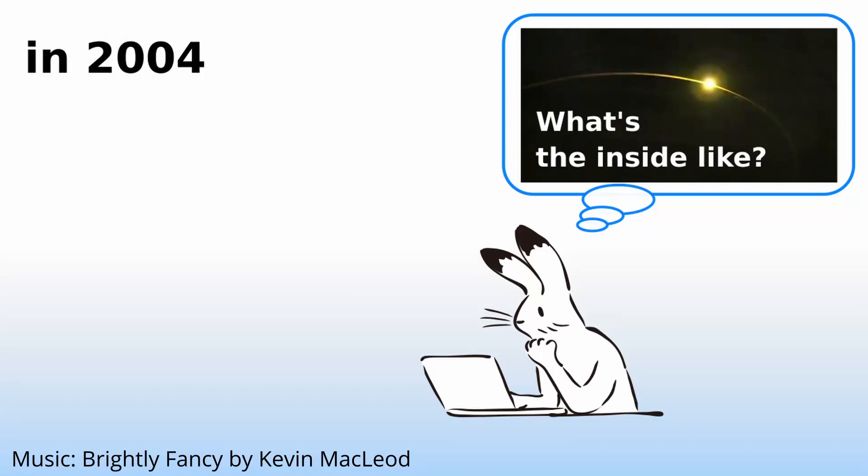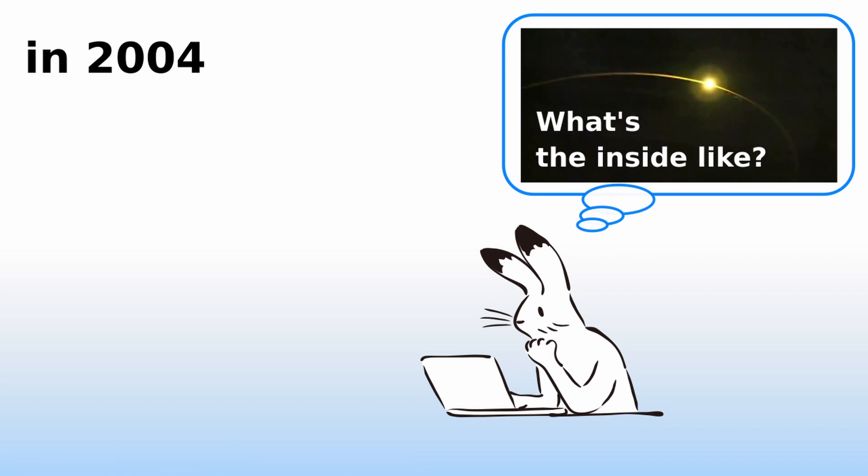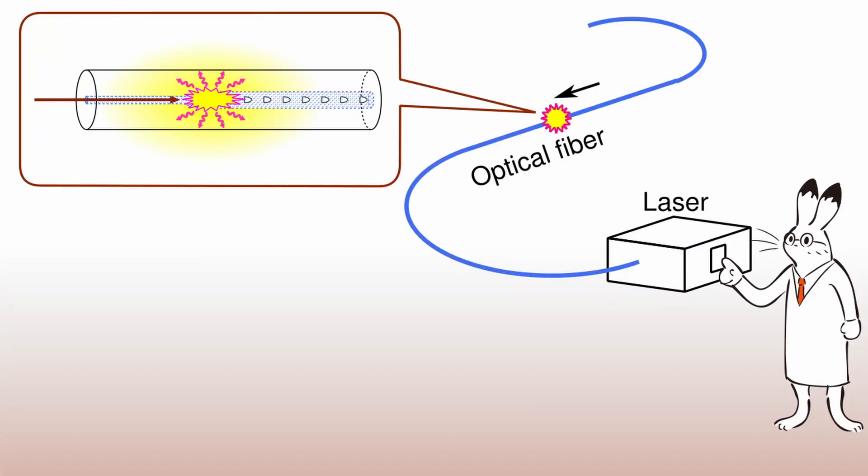When he started his research on fiber fuse, he could not find any previous experimental studies focusing on the inner structure of the running spot of light. The spot was believed to be a small amount of plasma-like gas captured in an optical fiber.